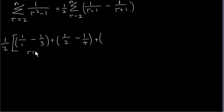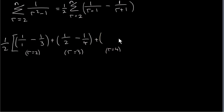So this first term corresponds to r equals 2 — it actually starts at 2. This second term corresponds to r equals 3, so we keep increasing r by 1. The next term corresponds to r equals 4: we put 4 in for r, we get 1 over (4 minus 1), that's 1 over 3, minus 1 over (4 plus 1), that's 1 over 5.